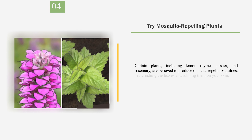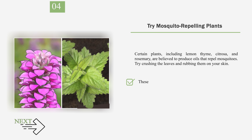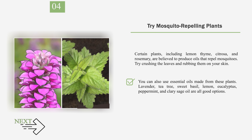Number 4: Try mosquito repelling plants. Certain plants, including lemon thyme, citrosa, and rosemary, are believed to produce oils that repel mosquitoes. Try crushing the leaves and rubbing them on your skin. These plants are not as effective and do not last as long as chemical repellents, so you will need to reapply frequently. You can also use essential oils made from these plants — lavender, tea tree, sweet basil, lemon, eucalyptus, peppermint, and clary sage oil are all good options.